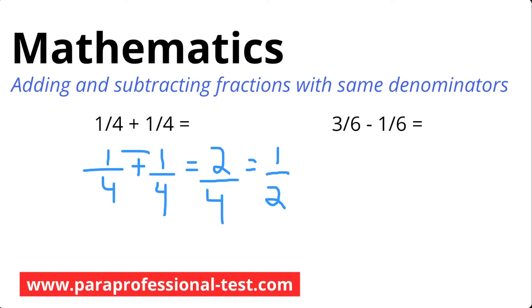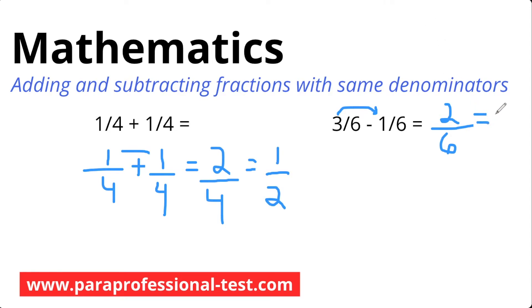We'll take 3 minus 1, which is 2. We have a 3 at the top and a 1 at the top, so 3 minus 1 is 2. We keep the denominator the same for addition and subtraction of fraction problems, so we're left with 6 on the bottom. As step 3 states, if we can, we need to simplify. Having 2 over 6, I ask myself if there is a number that goes into both 2 and 6 — 2 does — so I divide the top and bottom by 2, and I'm left with 1 third. Is that what you got? Great! Let's continue.